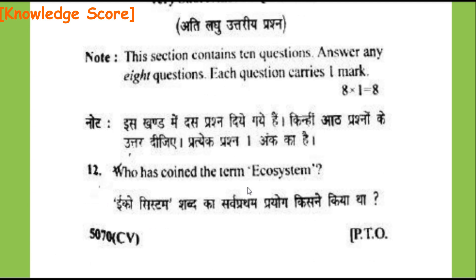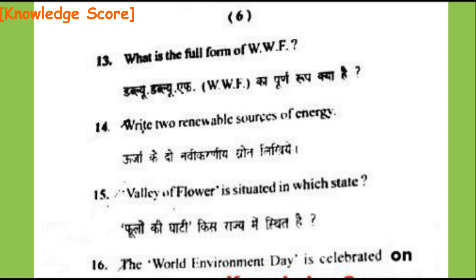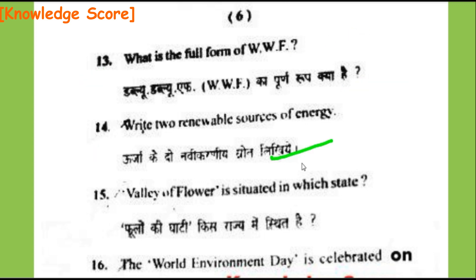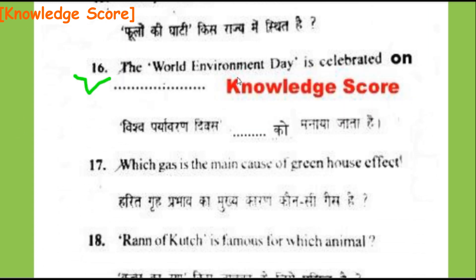Question 12, Section C: Who coined the term 'ecosystem'? Question 13: What is the full form of WWF? Question 14: Write two renewable sources of energy. Question 15: Valley of Flowers is situated in which state? Question 16: World Environment Day is celebrated on which date? Question 17: Which gas is the main cause of greenhouse effect?